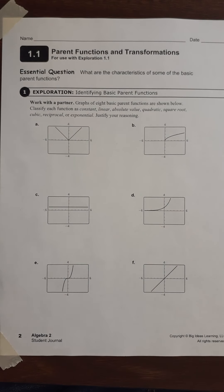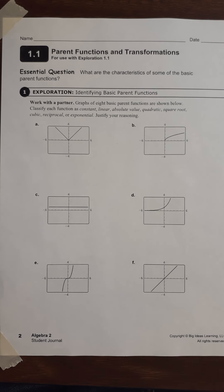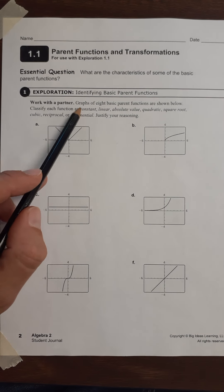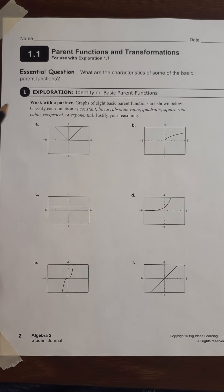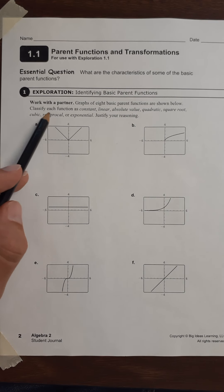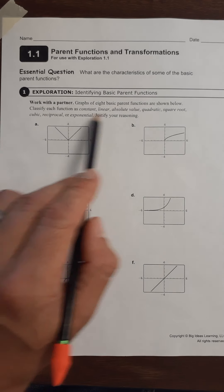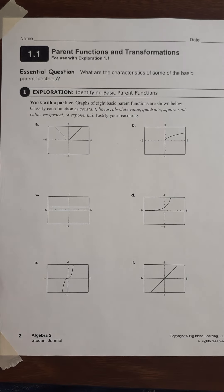Alright, so let's get going. We're taking notes — you're in your student journal on page 2, and we're going to try to do pages 2, 3, and 4 together. So it first says: graphs of 8 basic parent functions are shown below. Classify each function as — and then it gives you a list of options.